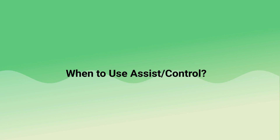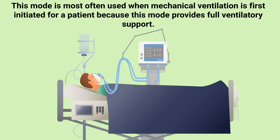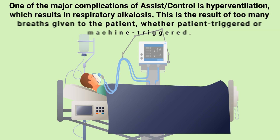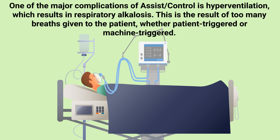You may be wondering when you should use the assist control mode. This mode is most often used when mechanical ventilation is first initiated for a patient, because it provides full ventilatory support. That is also one of the advantages of using assist control — it keeps the patient's work of breathing requirement very low. One of the major complications of assist control is hyperventilation.